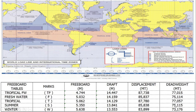To calculate the maximum cargo to load in a summer zone — for example, a summer load port proceeding to a summer zone discharge port — you consider only the freeboard table summer maximum draft of 13.841 meters, no more than that. Your maximum displacement is fixed, and your deadweight minus total consumables gives your maximum cargo.